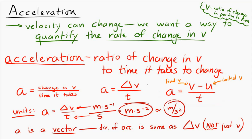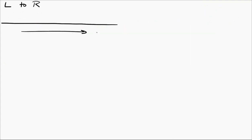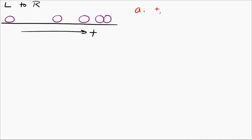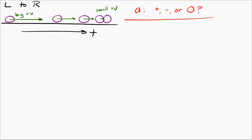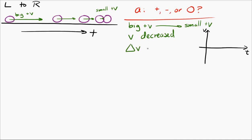We'll practice with numerical problems another time. Right now I want to look at a motion diagram for a ball moving from left to right. The question is: is the acceleration positive, negative, or zero? Choosing positive to be to the right, the ball starts out with a big positive velocity and later has a small positive velocity. So the velocity went from big positive to small positive — the velocity decreased, meaning the change in velocity was negative.